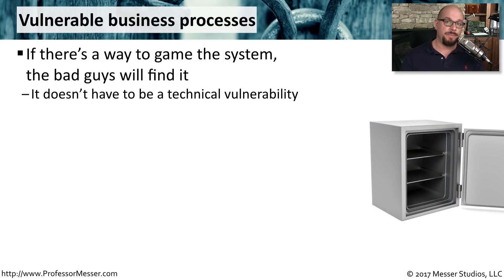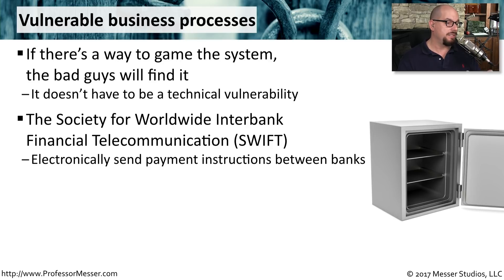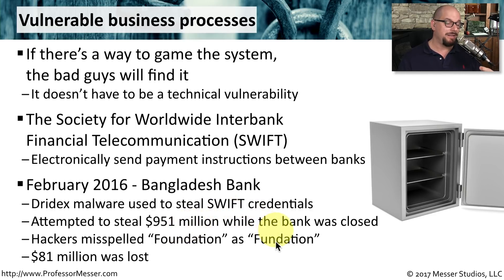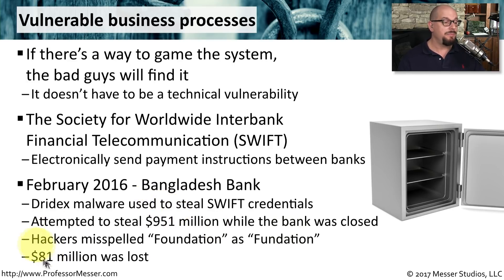If your organization doesn't have a set of checks and balances to handle your most significant business processes, the bad guys may be able to take advantage of that. A good example is SWIFT — the Society for Worldwide Interbank Financial Telecommunication — a way that banks can electronically send payments to each other. In February of 2016 at Bangladesh Bank, malware was used to steal the credentials used for these transactions. The hackers, though, misspelled the word 'foundation,' and this caught the eye of someone who thought something may not be quite right. Although $951 million was ultimately not stolen, they did manage to steal $81 million. SWIFT had to completely redesign the process to prevent anything like that from happening again.